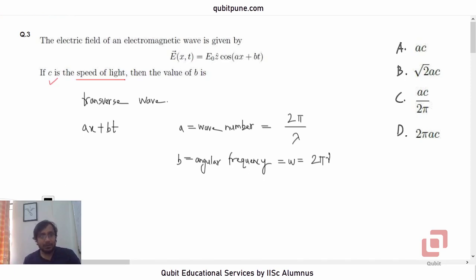Okay, now they are saying if c is the speed of light. So c is the speed of light. What is the standard formula? c is equal to λ into ν. This is the standard formula which all of you might be knowing. c is equal to λν.